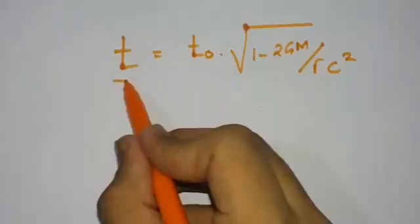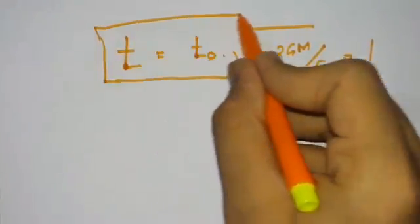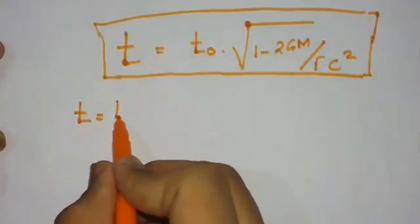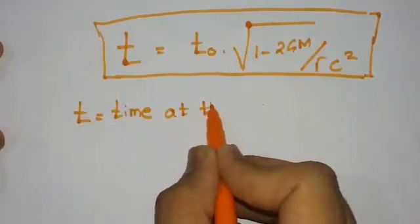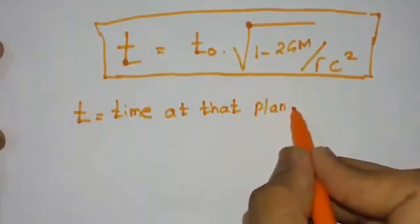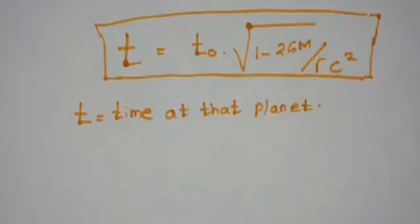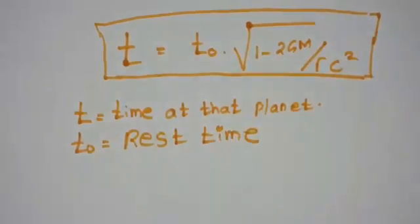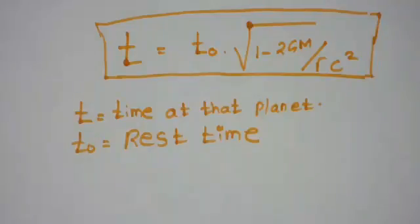Now let me explain what each symbol stands for. T is the time at that planet — the time experienced when you are standing on that planet. T-naught is the rest time — the time when we are standing in vacuum, not in motion. If someone is in space, they would see us moving with the speed of Earth, so Earth is not actually a rest-time reference. T-naught is nothing but rest time.